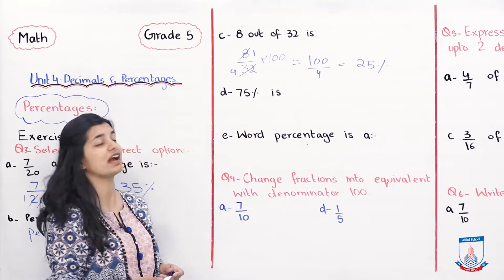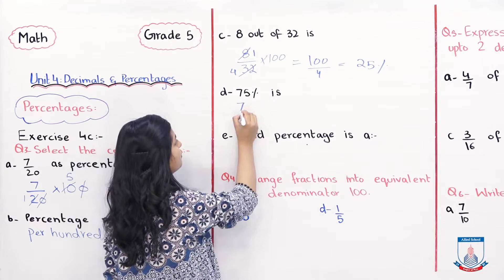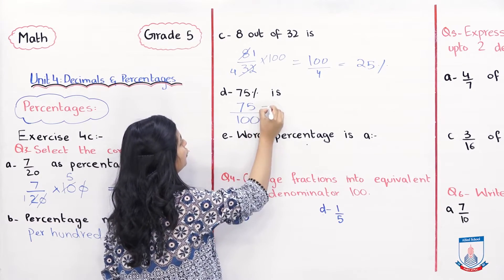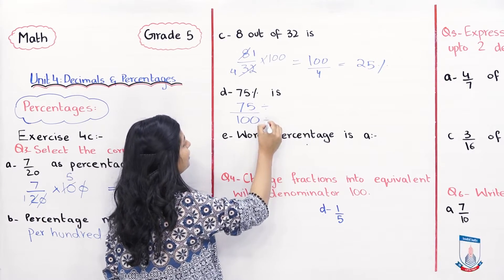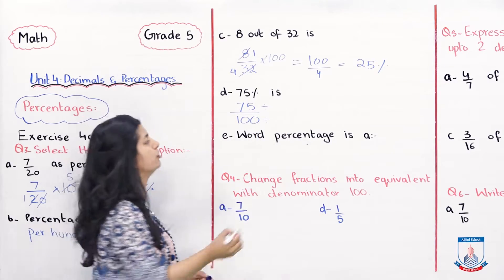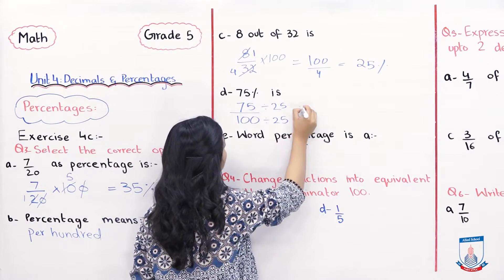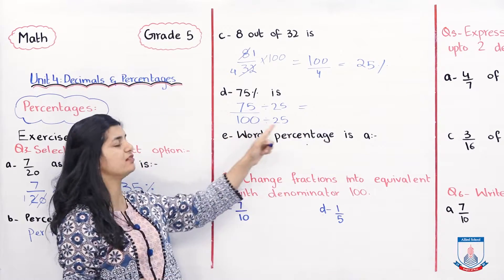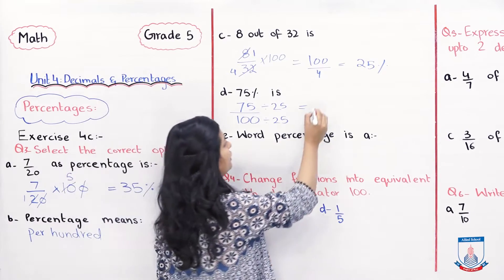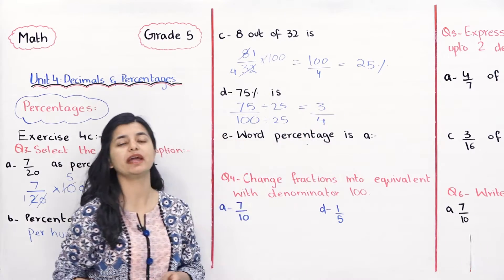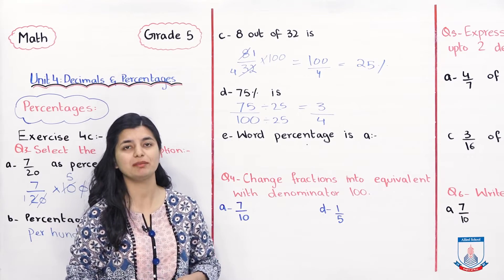D hai 75 percent is. Isko agar hum fraction ki surat mein likhe, 75 percent hai toh 75 over 100. Dono ko hum ab simplify karte hai. Divide kis se kar sakte hai dono ko? 25. We get 75 divided by 25 is 3 and 100 divided by 25 is 4. Toh aapka jo correct option hooga, ismei wo hooga 3 by 4.